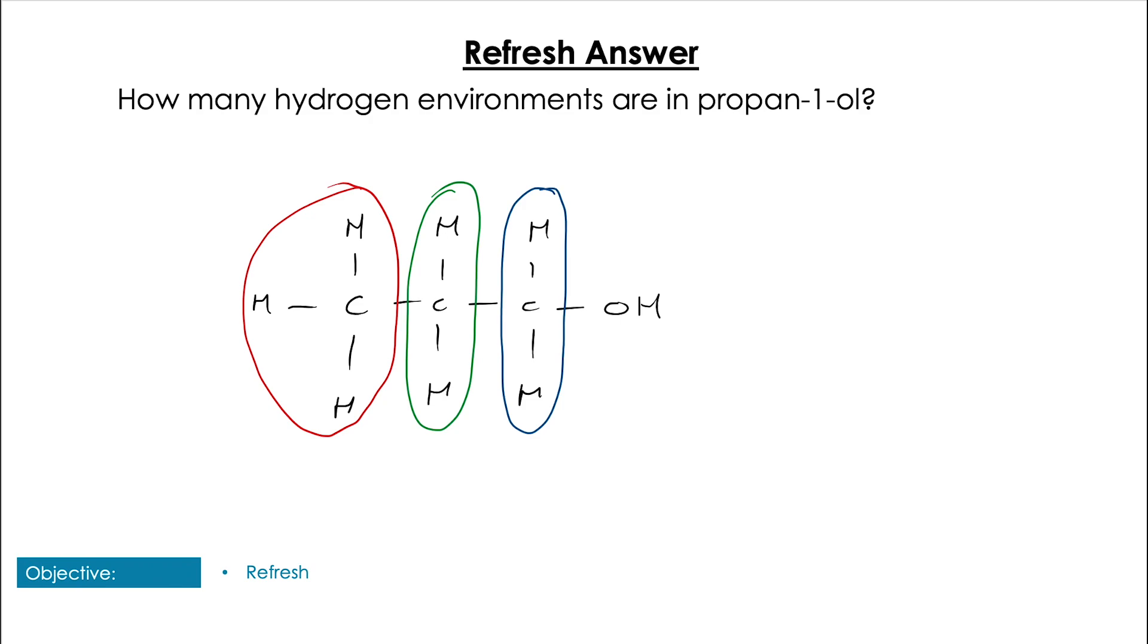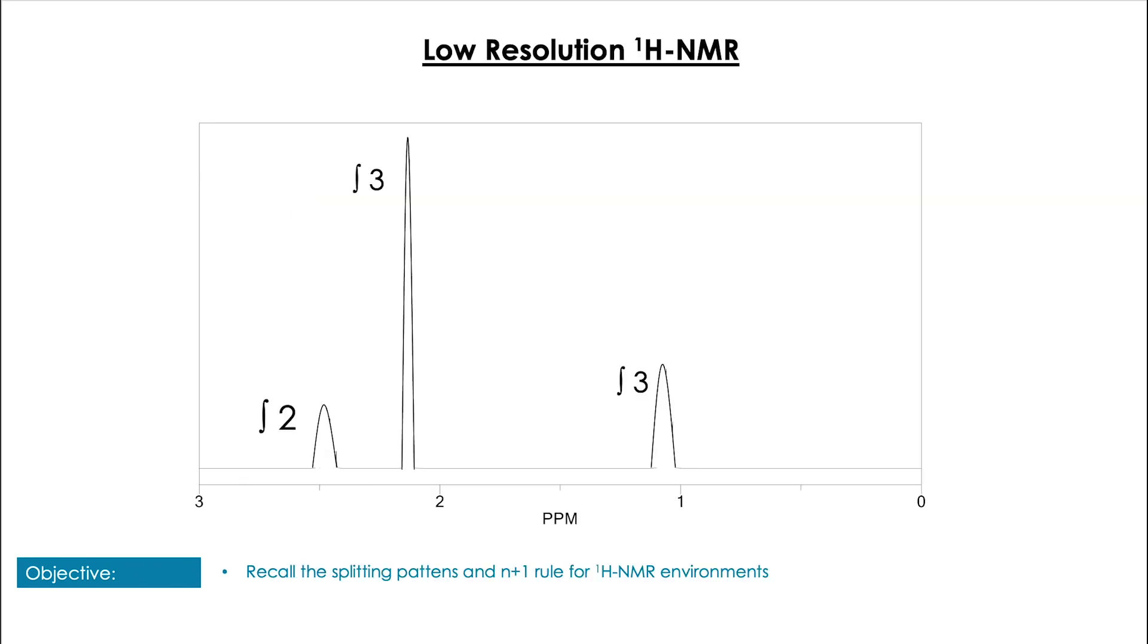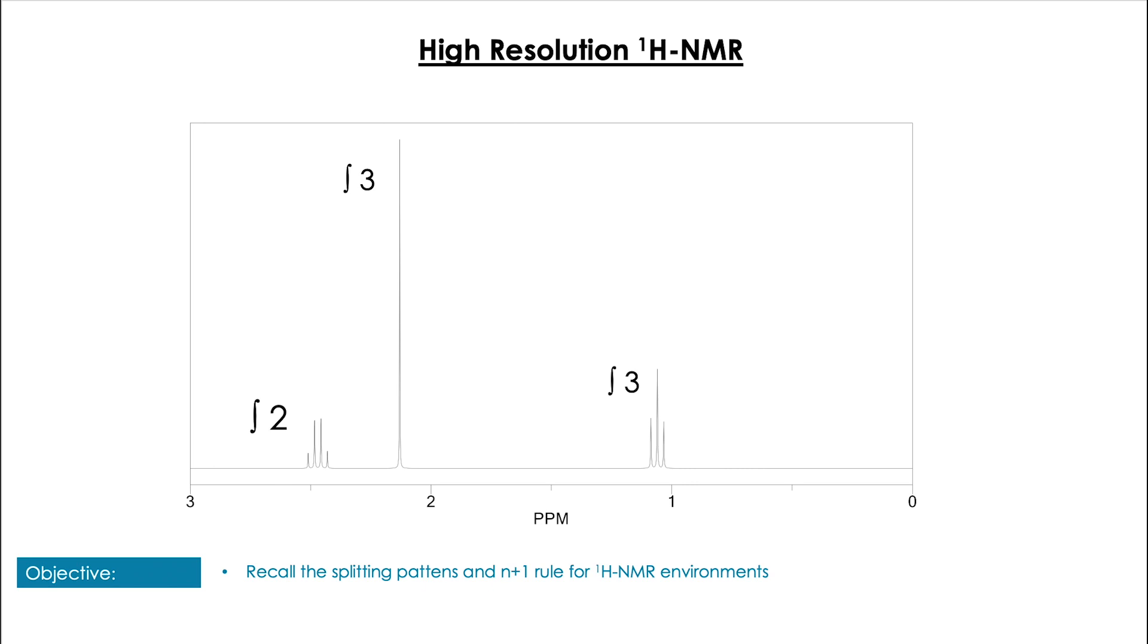So in the last video we looked at low resolution H-NMR with these kind of fat peaks that we integrated. However, if we have more sensitive instrumentation, then we can look at high resolution H-NMR and we'll see the integral values stay the same, but now we get these interesting split patterns where we get one, four, and three peaks respectively on this spectra.